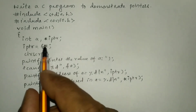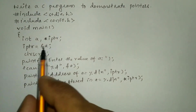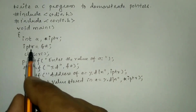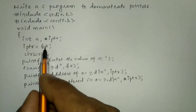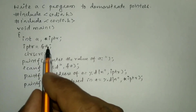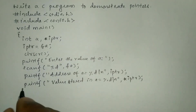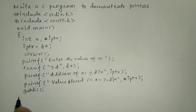So what is a pointer? A pointer is a special variable that holds the address of another common variable. Next we are going to write the getch function, then curly closing brace.